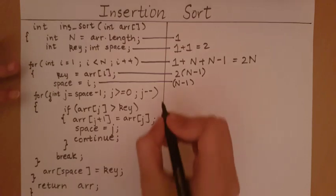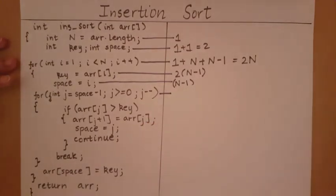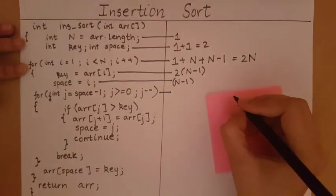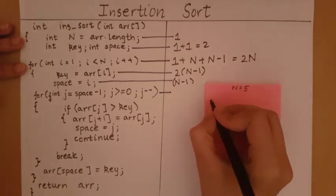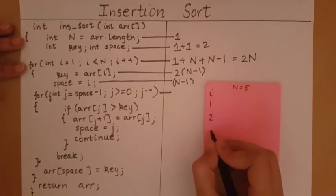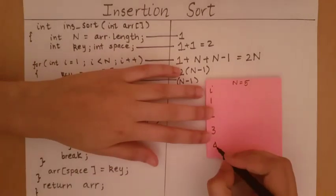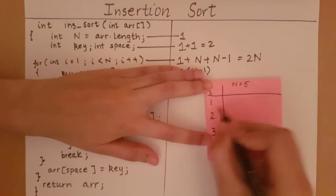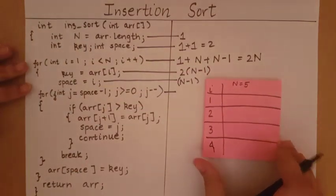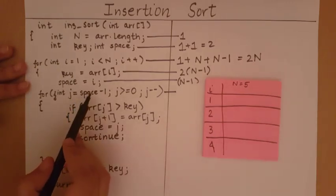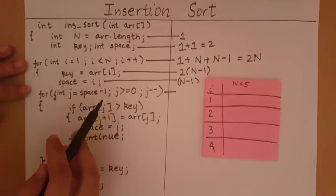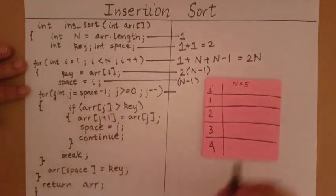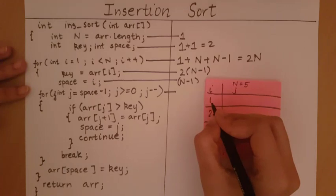Now let's look at the inner j-loop. Taking the same example where n equals 5, j starts from the value i-1 and decrements toward 0. So when i equals 1, j equals 0; when i equals 2, j takes values 1 then 0; when i equals 3, j takes 2, 1, then 0; when i equals 4, j takes 3, 2, 1, then 0.